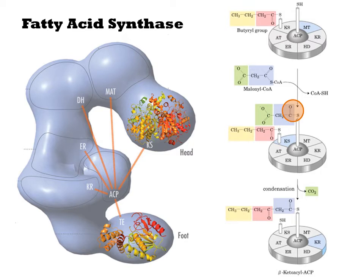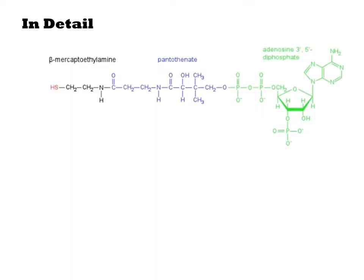Once that length is reached, the new fatty acid molecule is released from the enzyme as a free acid by hydrolysis, or by transesterification with CoA to obtain a CoA derivative. Let's go back and look at it in more detail.